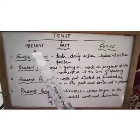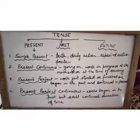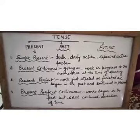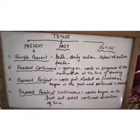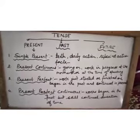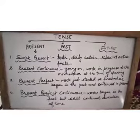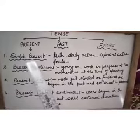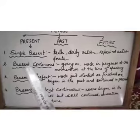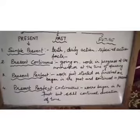Today we will do about the present form — present tense. Present tense means the verb which we do at the present time, which we are doing now. Present tense can be divided into four parts: simple present, present continuous, present perfect, and present perfect continuous.